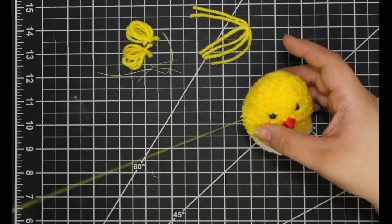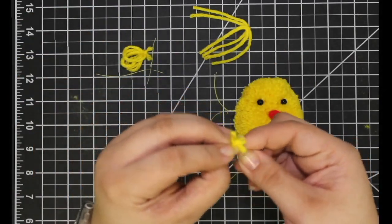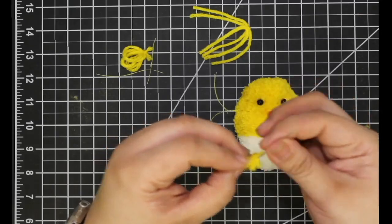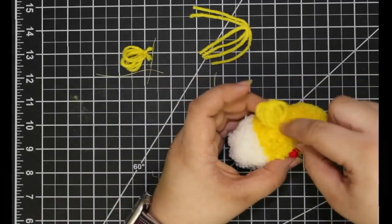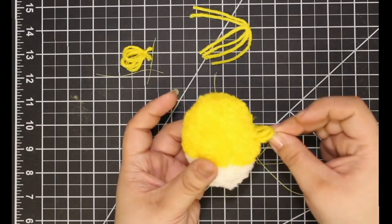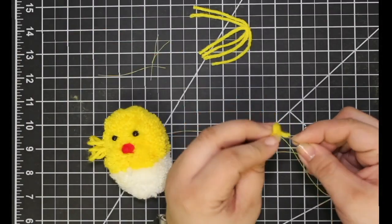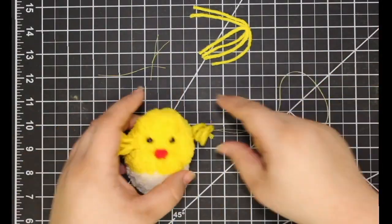Now run your needle and thread through the sides to attach the arms. Similar to the beak, thread your needle through the knot at the base of the arm and then thread back through the middle of the chick to the opposite side. Pull the thread lightly to tighten the arm into position. Repeat this step for the other arm.